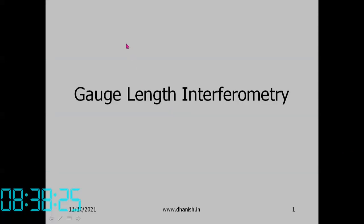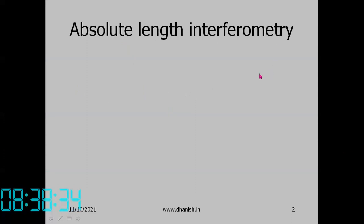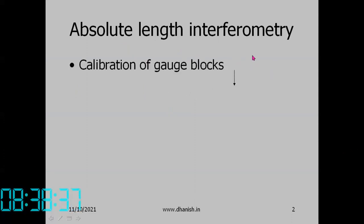Interferometry. How do we calibrate gauge blocks using interferometry? Absolute length interferometry is used for calibration of gauge blocks.